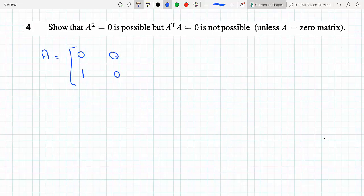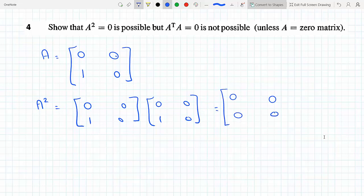Let's find what A squared is. A squared means we multiply A by itself. Row times column: zero plus zero equals zero, zero plus zero equals zero, zero plus zero equals zero, and zero plus zero equals zero. So indeed A squared equals zero matrix.